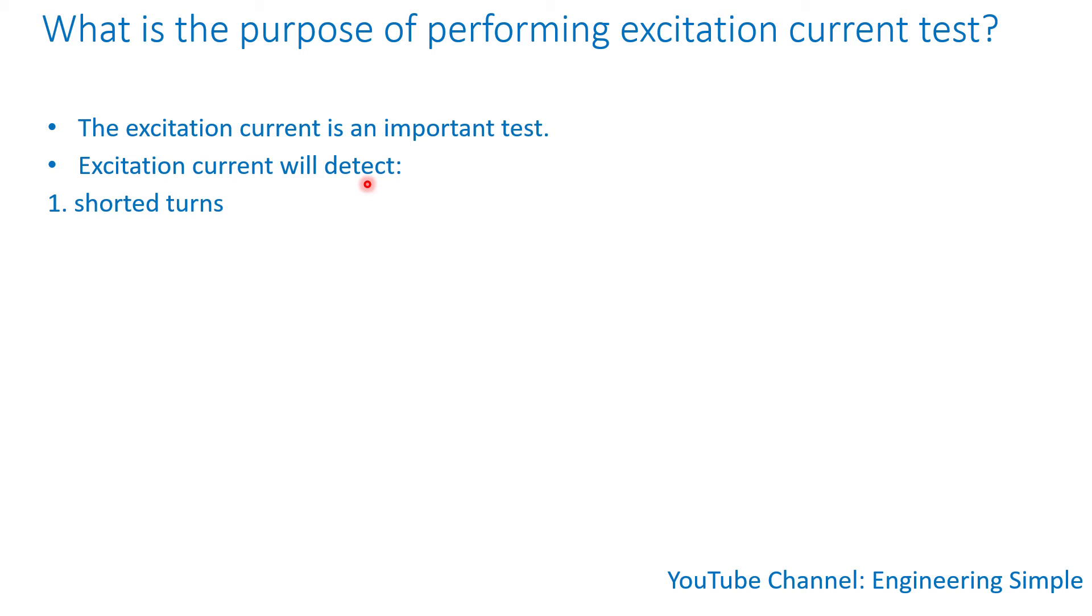The excitation current test will detect a couple of things. If there are shorted turns, it will also detect shorted winding to ground, core lamination insulation damage.